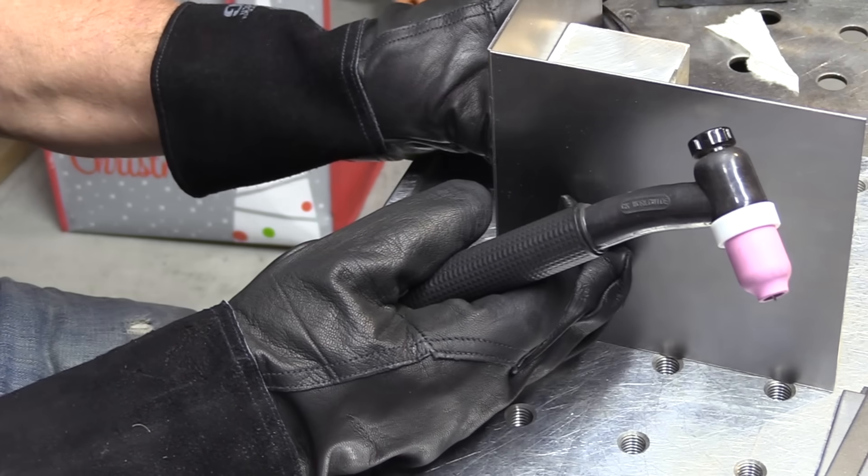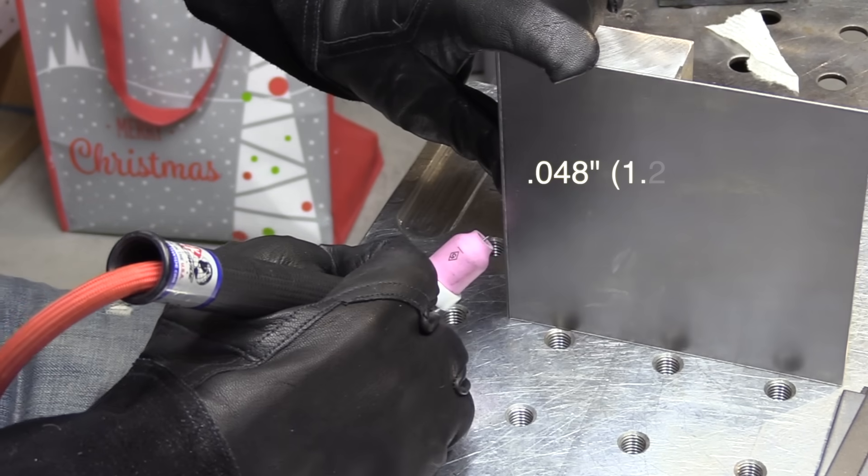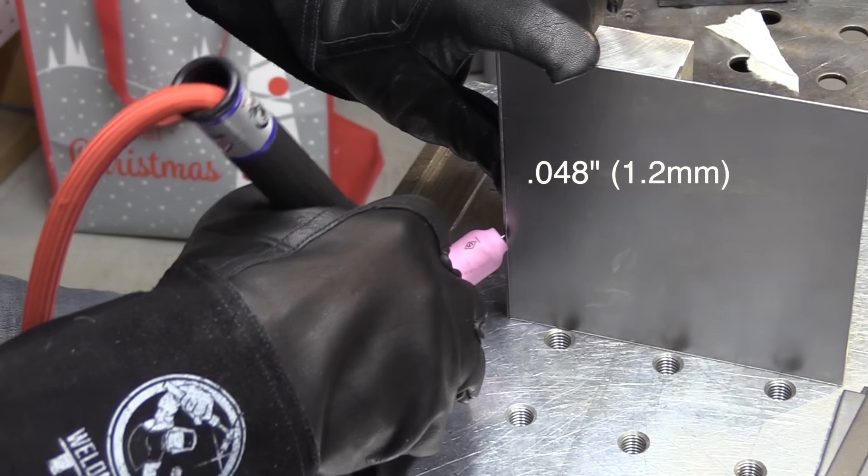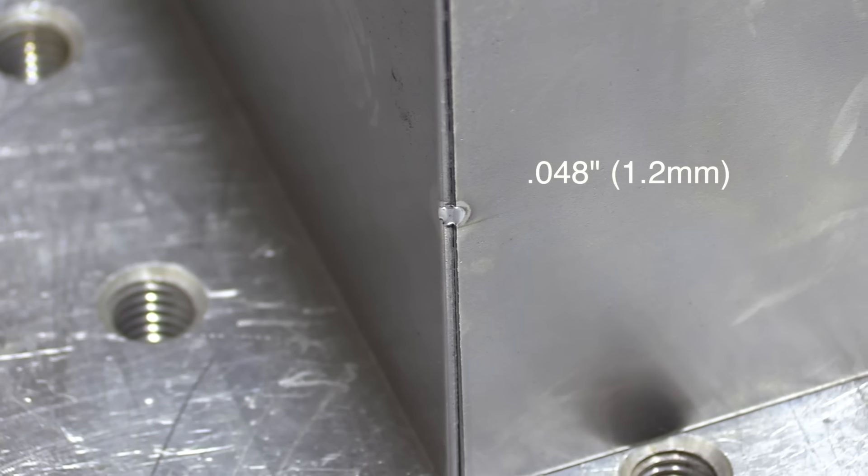In this video I'm TIG welding some 18 gauge cold rolled. That's just a little bit less than 50 thousandths of an inch. I'll be doing some flash tacking and kind of going over how that works.